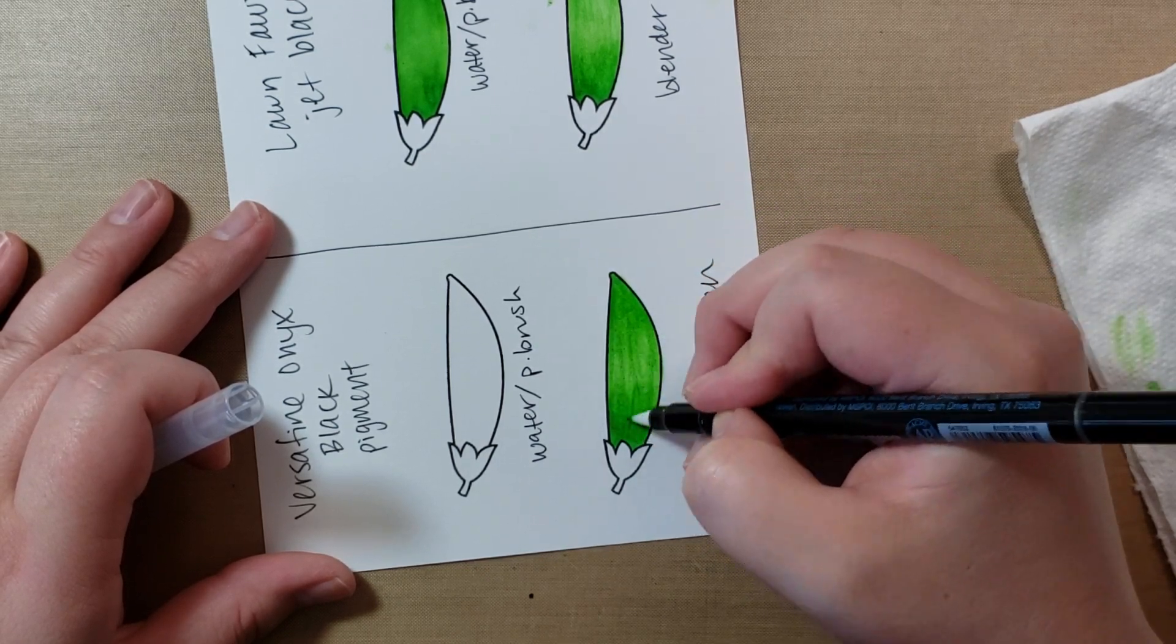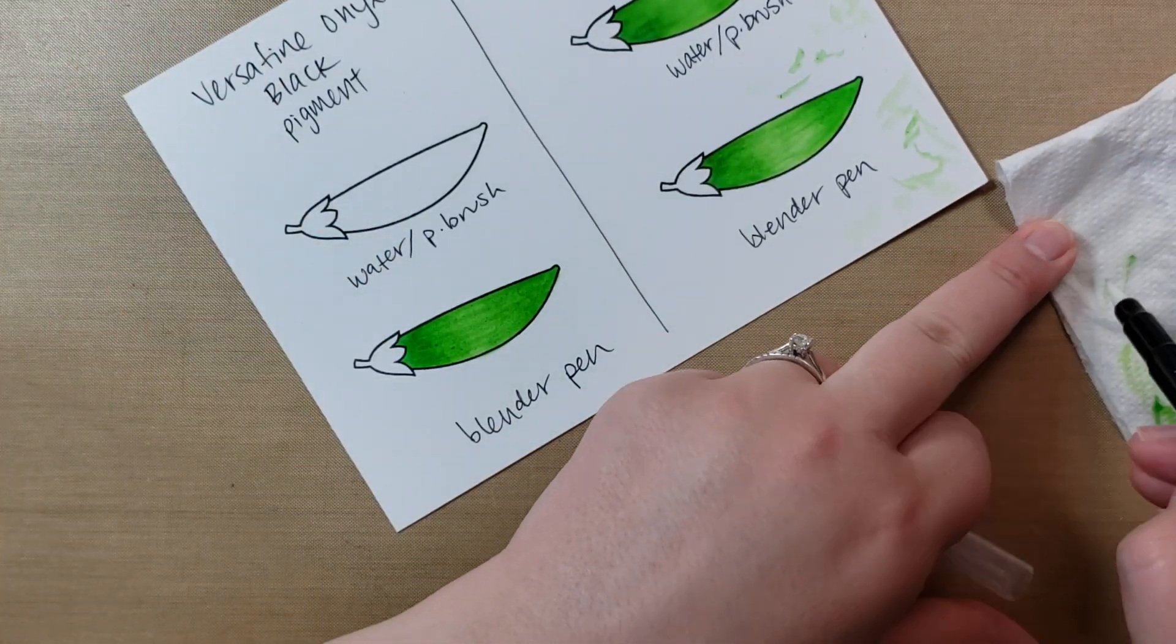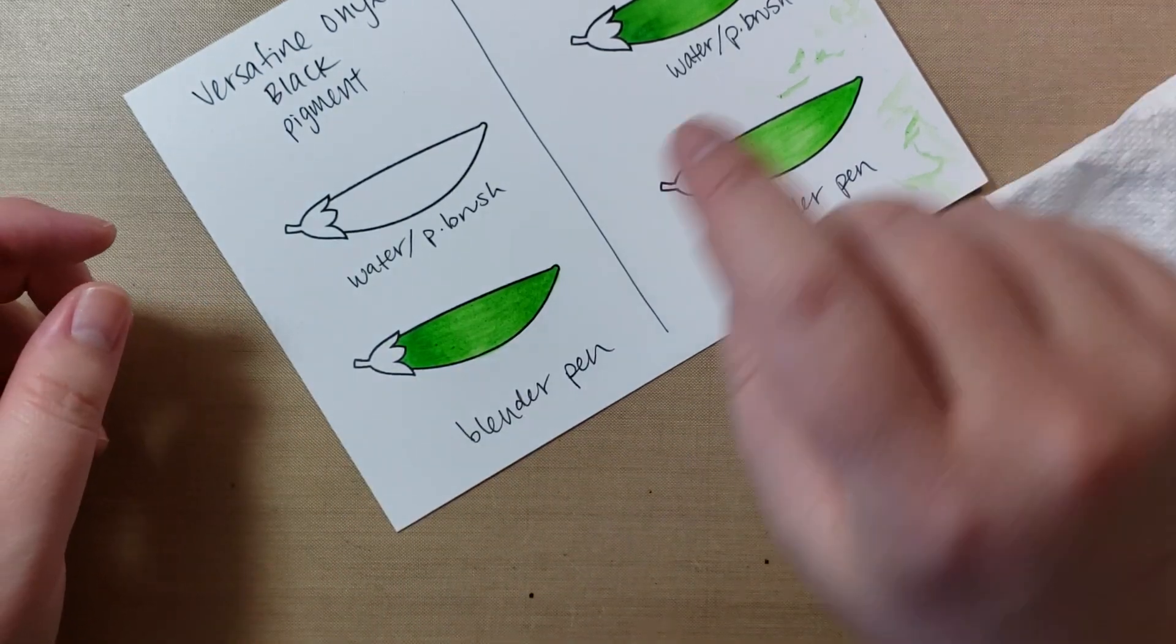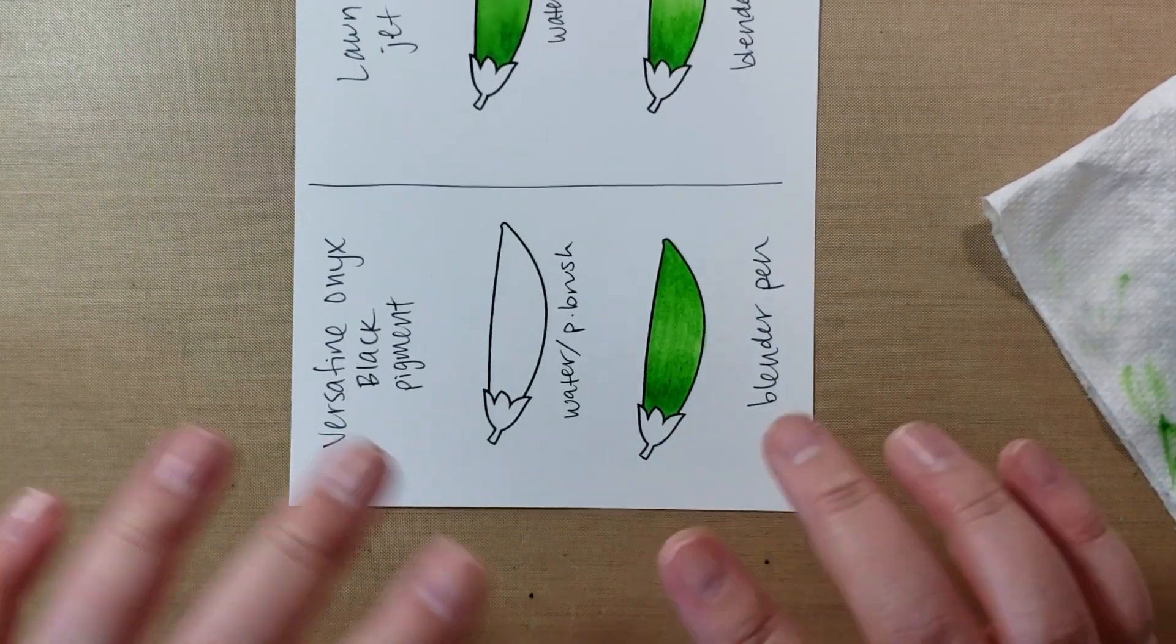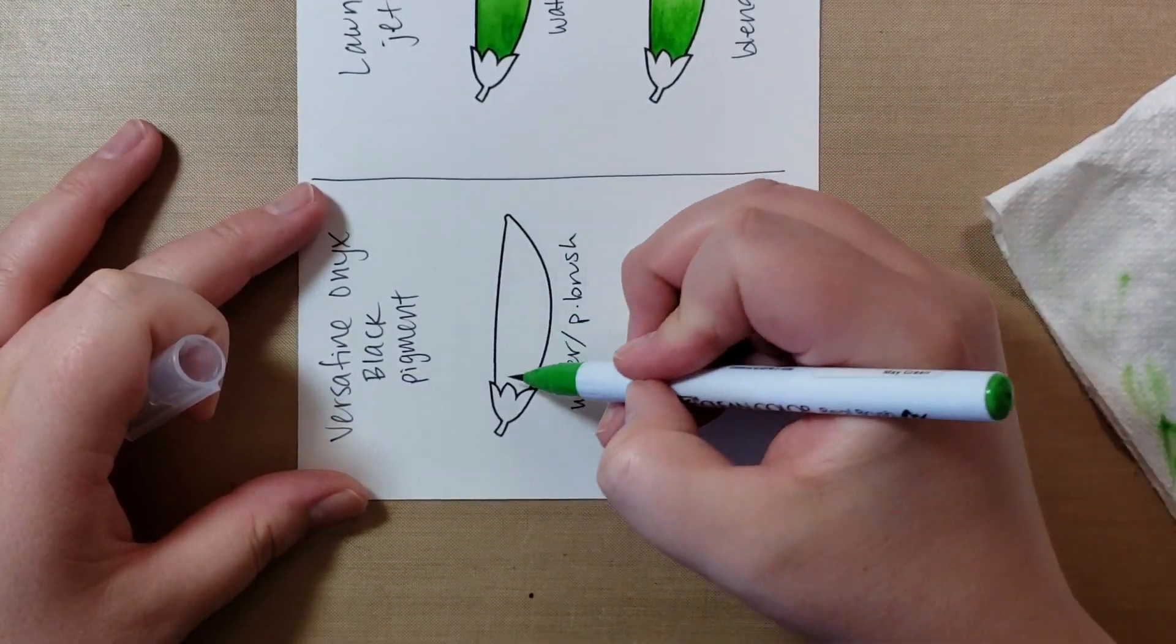So again, it blends great. It's just the paper pilling is what's gonna bother me, I think. So I think I'll get, I'll still get the zig blender pen. And if that works a lot better on the Bristol smooth, great. If it doesn't, I will just stick with watercoloring. I'm fine with that.